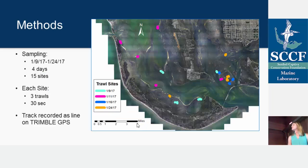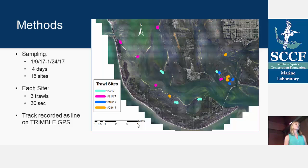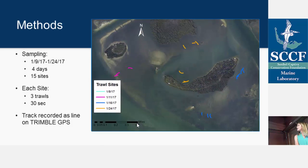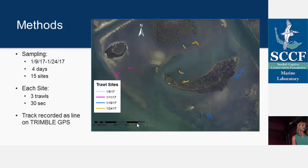Now going into my methods. We sampled on four different dates, ranging from the 9th to the 24th of January — that was over four days. We had 15 sites, and at each site we would conduct three trawls, each one 30 seconds. We would record our line using a triple GPS so that we could get our exact position coordinates into GIS — which is what this plot here is showing you. Different colors represent our different trawling days. You can see the lines when you zoom in — you'll notice most sites have three trawls, but sometimes we had to redo one.